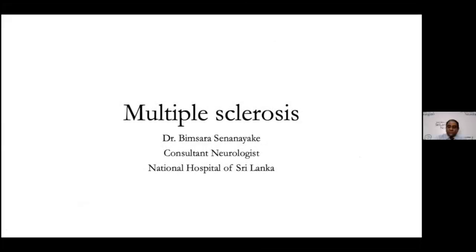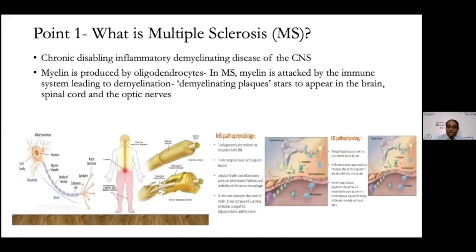The first talk is going to be on multiple sclerosis. Multiple sclerosis is a chronic disabling inflammatory demyelinating disease of the central nervous system. Myelin is produced by oligodendrocytes, and in MS this myelin in the central nervous system is attacked by the immune system, leading to demyelination. These demyelinating plaques are the pathological hallmark of the problem, causing symptoms in the brain, spinal cord, and optic nerves.